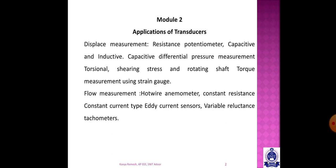The second section is flow measurement. We discuss flow rate and flow variations, the hot wire anemometer, constant resistance type, constant current type, eddy current sensors, variable reluctance tachometer, and motor speed measurement.